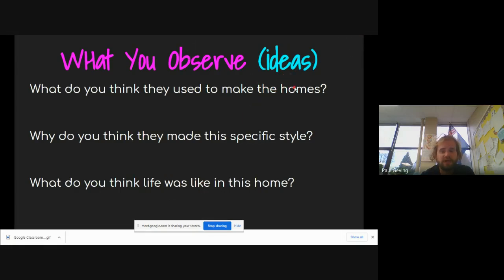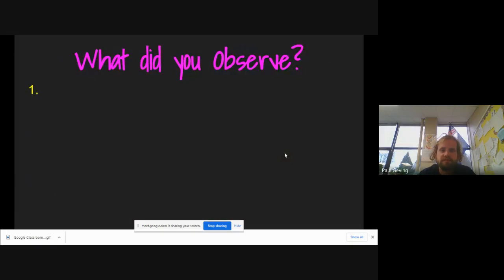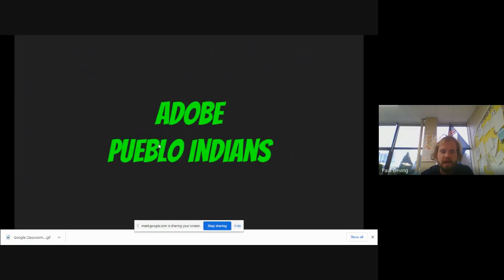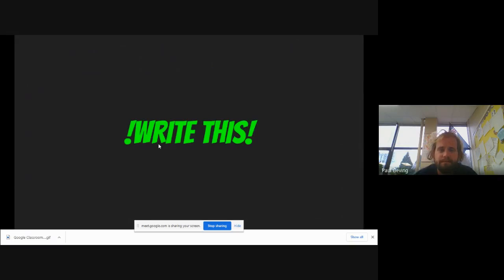And the last observation you can choose to make if you'd like is what you might imagine life to be like in that home. These are ideas, they are not required for you to answer these three. The next part of your slideshow is broken up into our three houses, the teepee and then there's some pictures of the house. And then you get to this slide, here's where you're going to be taking your notes on your copy of this slideshow. You'll just type your answer right here based on what you observe for those houses.